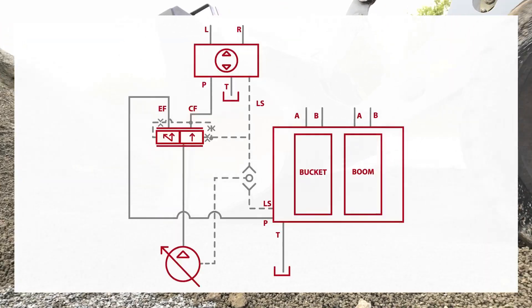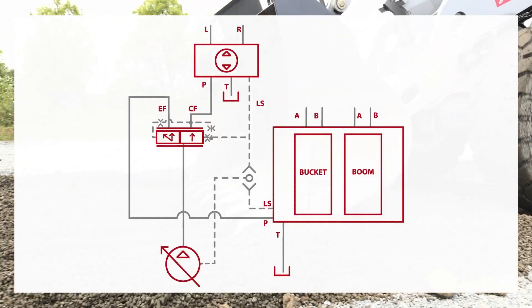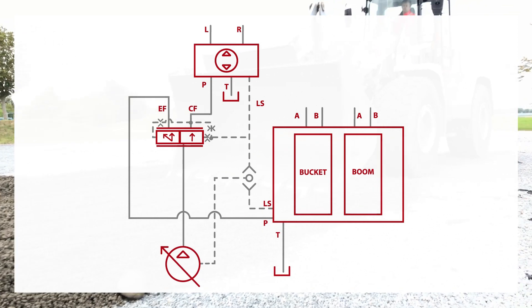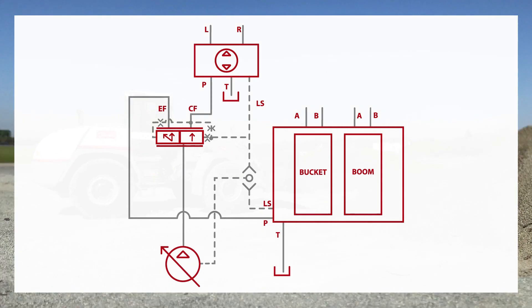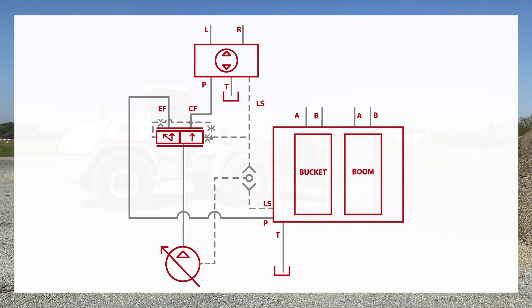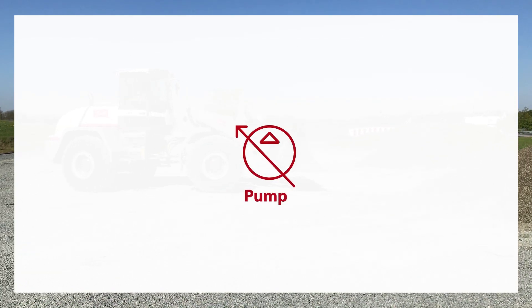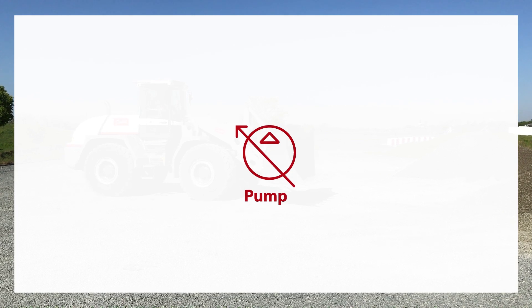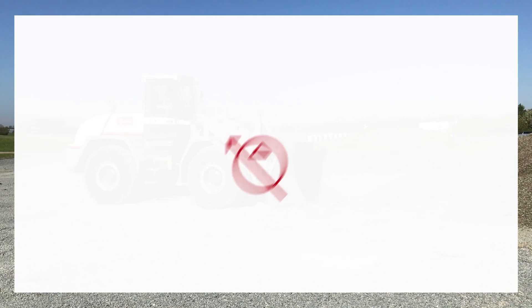Let's take a closer look at the hydraulic circuit diagram with special attention on the steering related components. The original steering system on this machine is a load sensing system. It is supplied by a Series 45 130 cc pump delivering up to 312 liters per minute depending on the engine rpm.